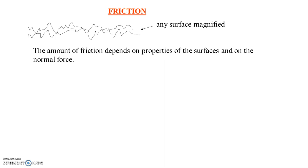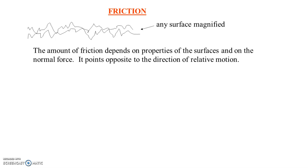Which way does the friction force point? It actually points to oppose relative motion. Some students get a little confused and think it has to oppose another force — and while that's going to happen a lot of the time, that's not necessarily the case. If you push an object and let it go, you're not pushing anymore, so there's no force in that direction of motion, but there will still be a friction force opposing the relative motion between the surfaces.